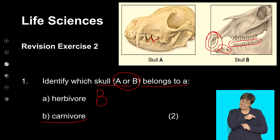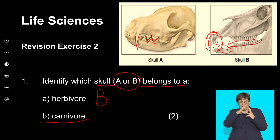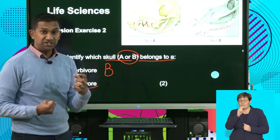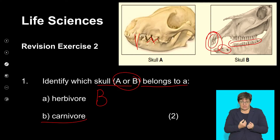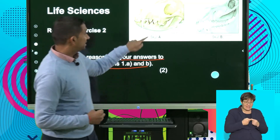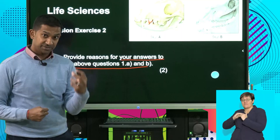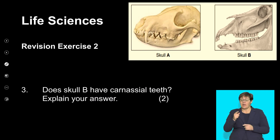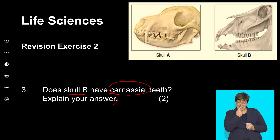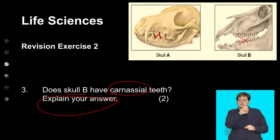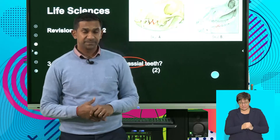The carnivore is skull A — the giveaway is the large canines, along with triangular-shaped teeth, typical of a carnivore that consumes a diet rich in meat protein and uses its teeth to crush and mince bone and protein. Reasons for your answers: the triangular teeth are adapted for crushing bones, and the flattened teeth for grinding plant material. Does skull B have carnassial teeth? No, it does not — skull B has flattened teeth, whereas triangular carnassial teeth are adapted for a carnivorous diet.